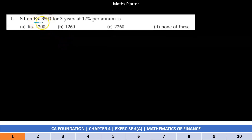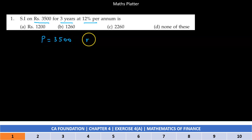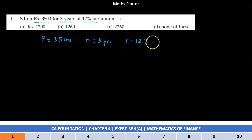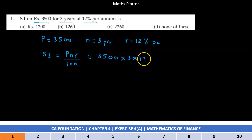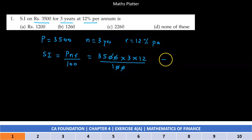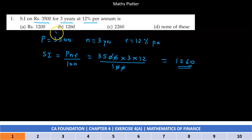The simple interest on Rs. 3,500 for 3 years at 12% per annum is. Here the principal is 3,500, time period n is 3 years, and rate of interest is 12% per annum. Simple interest ka formula hota hai P into n into r upon 100. So that is 3,500 into 3 into 12, divide by 100. The two zeros cancel out, so we have 35 into 3 into 12, which is Rs. 1,260. The correct answer is Option B.